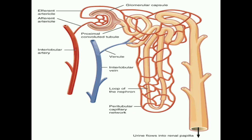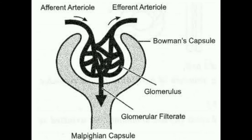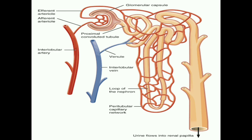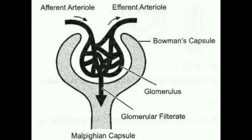Internally, the kidney is made up of numerous microscopic units called nephrons. A nephron is the structural and functional unit of excretion, and each kidney has millions of nephrons. Each nephron has a cup-shaped cavity called Bowman's capsule at its upper end. The lower end of the Bowman's capsule leads to a tube called a tubule, which is connected to the collecting duct of the kidney at the other end. Within the Bowman's capsule, there is a bundle of blood capillaries called the glomerulus.